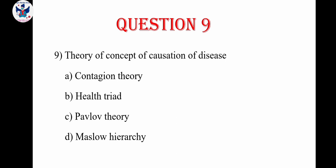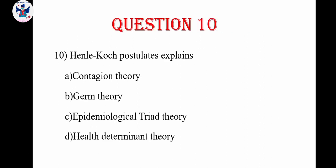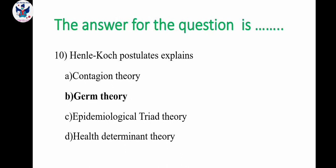Question number 9. Theory of concept of causation of disease is: A. Contagion theory, B. Health triad, C. Pavlov theory, D. Maslow hierarchy. The correct answer is Contagion theory. Question number 10. Henley-Koch postulates explains: A. Contagion theory, B. Germ theory, C. Epidemiological triad theory, D. Health determinant theory. The correct answer is option B, Germ theory.